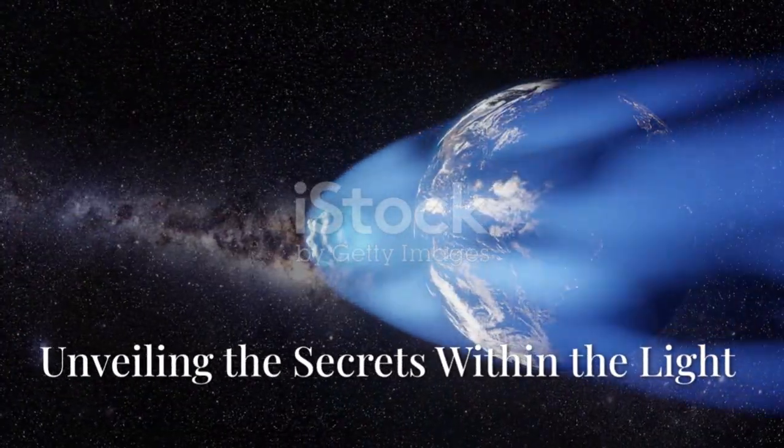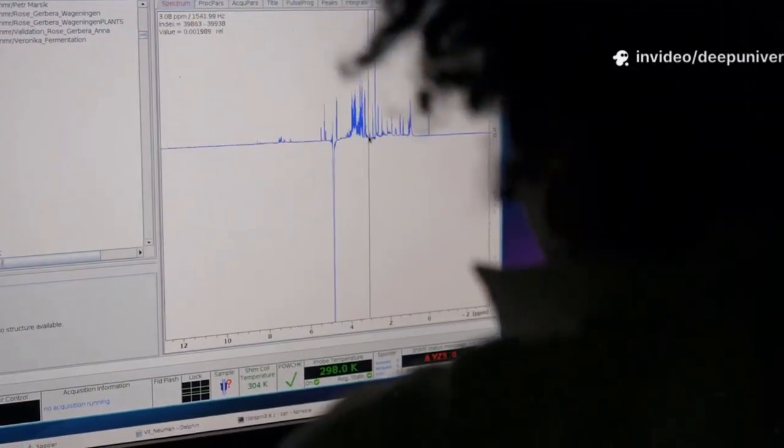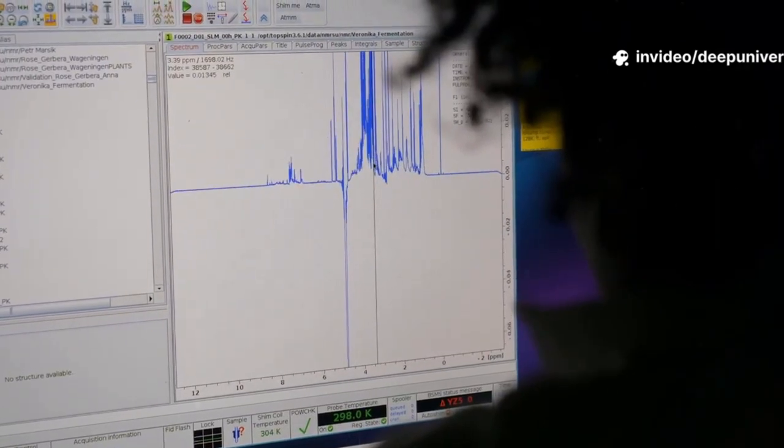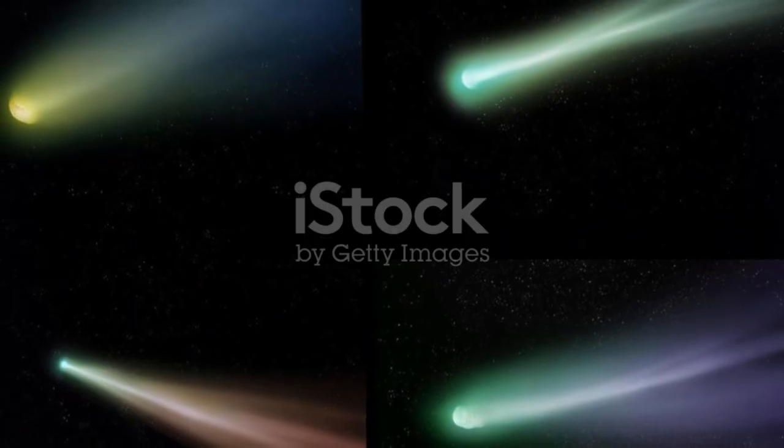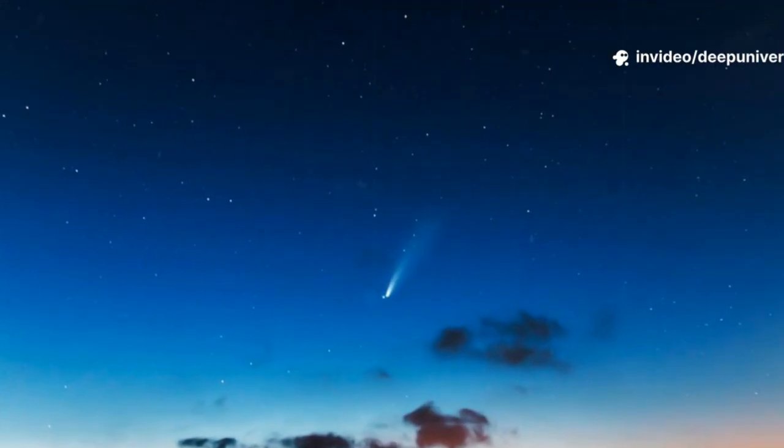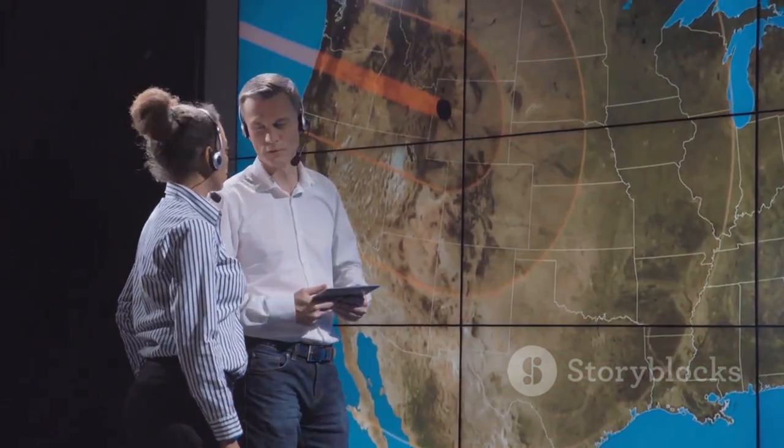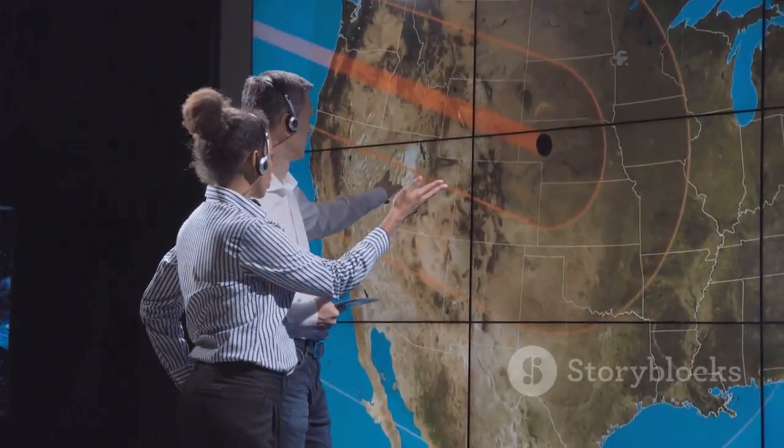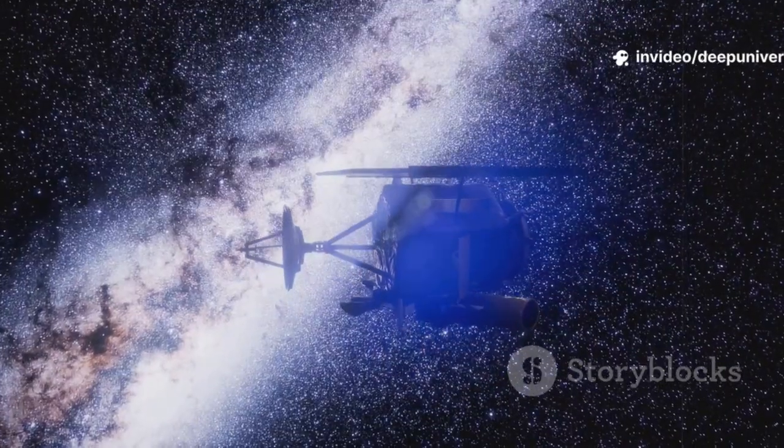The light from 3i Atlas, captured by Webb, is a treasure trove of information. Spectral analysis shows the comet's primary ices are water and carbon dioxide, just like our own comets. This hints at a universal recipe for comet formation and the widespread availability of life's building blocks. Webb's infrared vision also reveals the nature of the dust, its size, shape, and composition. These details provide clues about the environment where the comet formed. By measuring the dust-to-gas ratio, scientists can compare this interstellar comet to those in our solar system. Every photon Webb collects helps piece together the story of planetary systems across the galaxy.